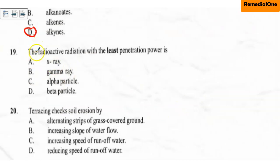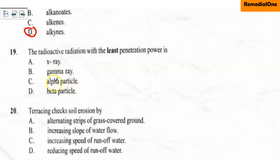Question nineteen: the radioactive radiation with the least penetration power is A. X-ray, B. gamma ray, C. alpha particle, D. beta particle. X-ray is not a radioactive radiation, so the options available are gamma ray, alpha particle, and beta particle. Among these three, alpha is the bulkiest, and the bulkiest always has the least penetration power. Gamma has the highest penetration power, followed by beta, and alpha is the least. So the correct option is C — alpha particle.